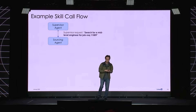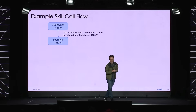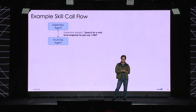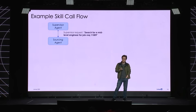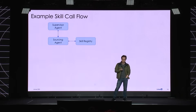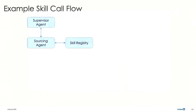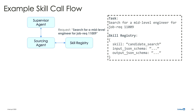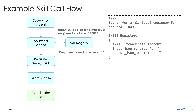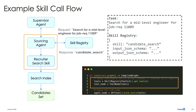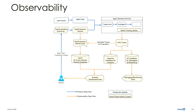Let me walk you through what a sample flow might look like. In this case, the supervisor agent tells the sourcing agent that it needs help searching for a mid-level engineer. The sourcing agent will contact the skill registry. The skill registry will respond with a skill it thinks is a good fit for the task. Finally, the sourcing agent will execute this skill. This links to the core components we've built — the emphasis being to make it really easy for agents to be developed.